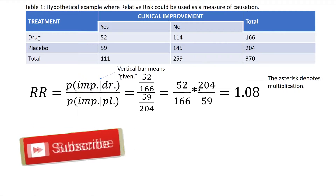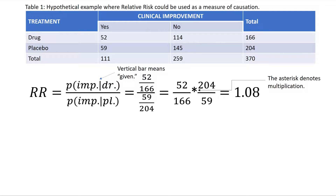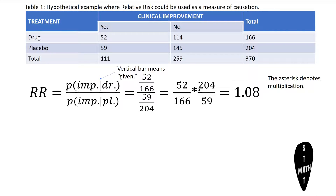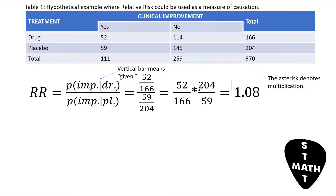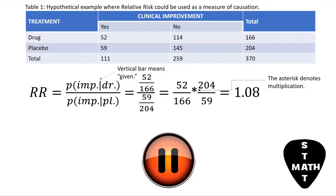Table 1 presents a hypothetical example where relative risk could be used as a measure of causation. Take a moment to look at this table and see if you can calculate relative risk from the definition. Pause the video if necessary.